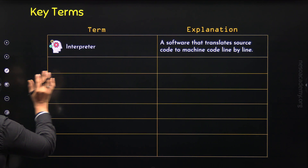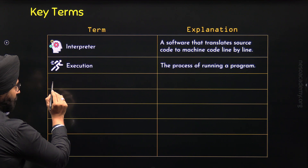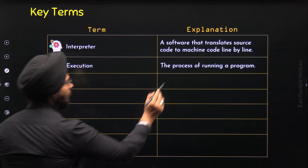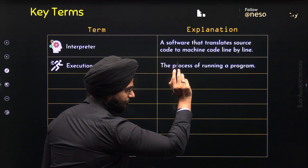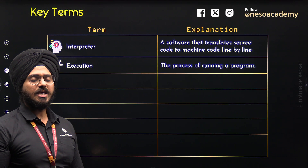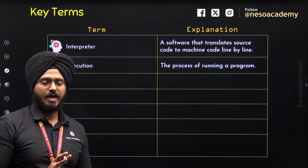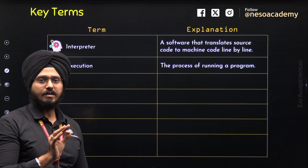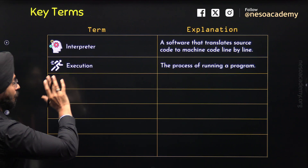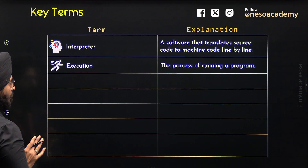Now let's move to the seventh term: Execution. Execution refers to the process of running a program. Running a program is equivalent to executing a program — they both mean the same thing. So execution and running a program are one and the same.